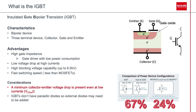Things to consider when using IGBTs: they have a minimum collector-emitter voltage drop present even at low currents. IGBTs don't have parasitic diodes, so external diodes need to be added to operate efficiently — IGBTs need freewheeling diodes. These have historically been silicon FRDs. New hybrid IGBTs from Roam Semiconductor incorporate SiC Schottky barrier diodes, or SBDs. This provides an astonishing 67% better switching efficiency compared to an IGBT with silicon, and 24% better switching efficiency compared to a MOSFET and its parasitic diode.